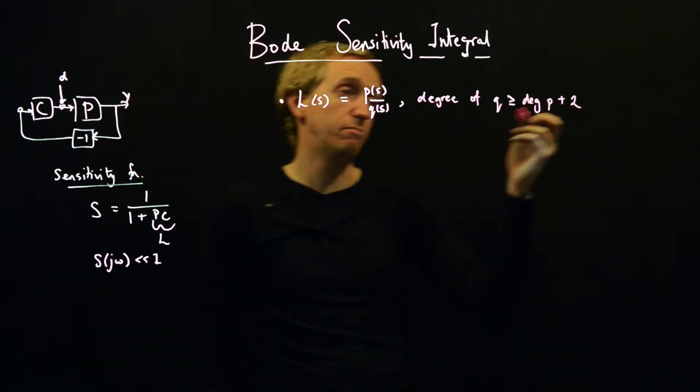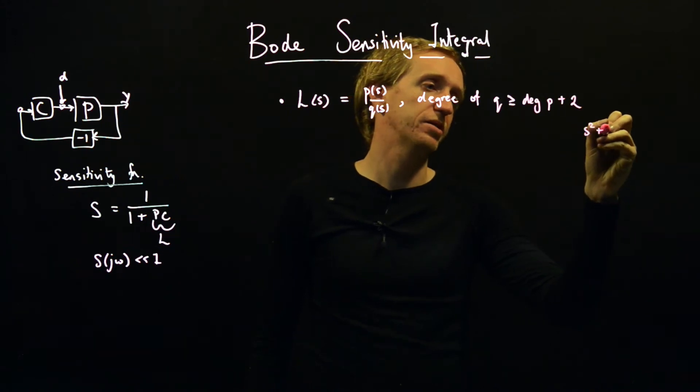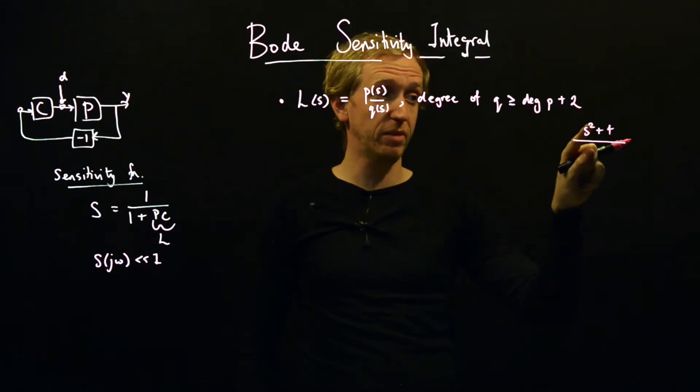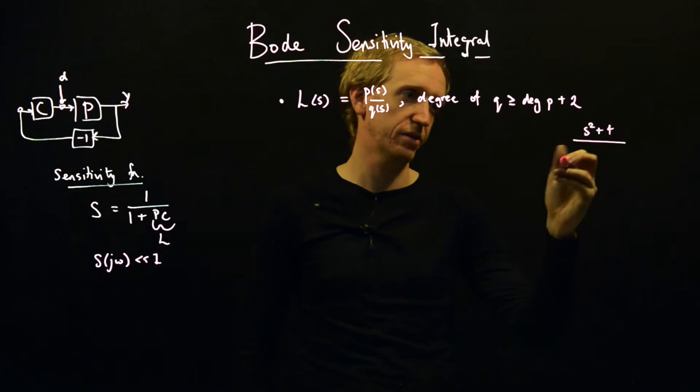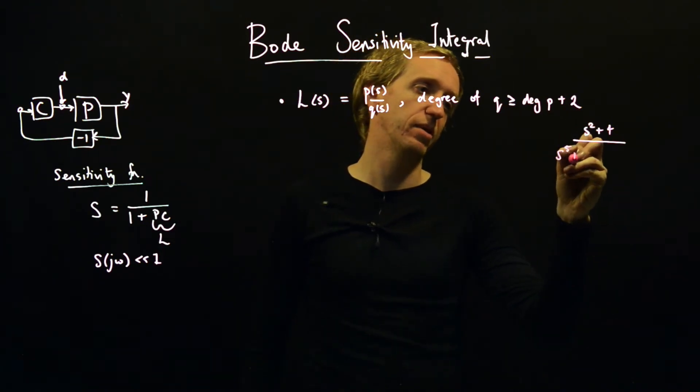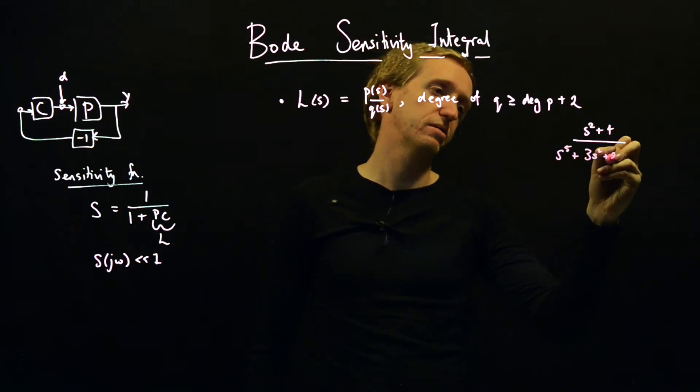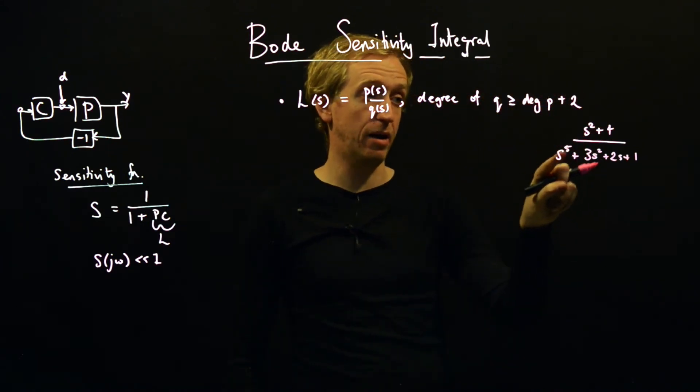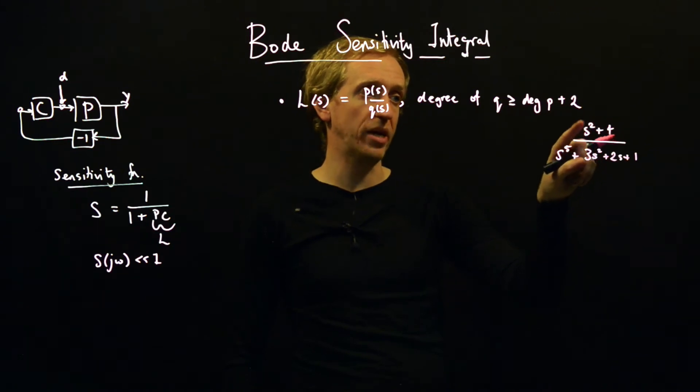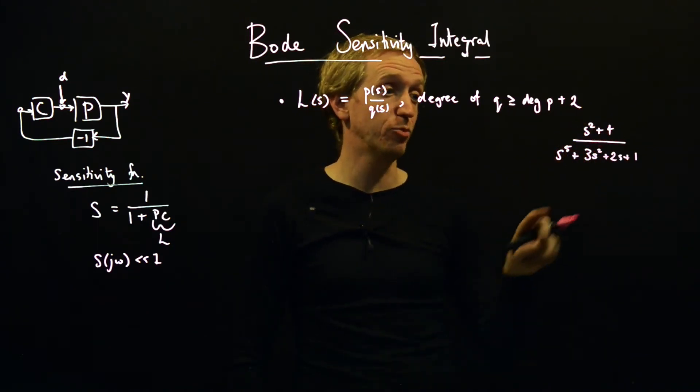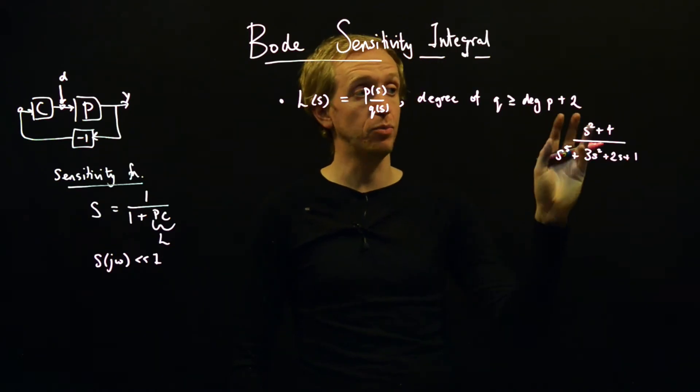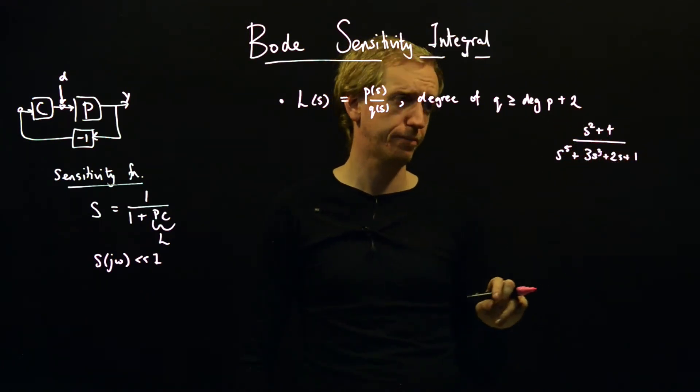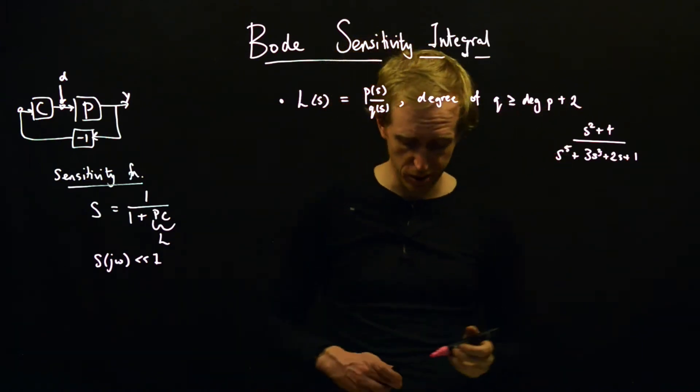Well, let's say P is s squared plus four. Then the polynomial in the denominator must have powers at least two higher than this. So for example, s to the five plus 3s squared plus 2s plus one - this would satisfy this degree condition because the highest power in the denominator is two or greater than the highest power in the numerator. We would be fine if this was s to the four as well. But if we didn't have that term and say that was s cubed, then we wouldn't meet this degree condition.